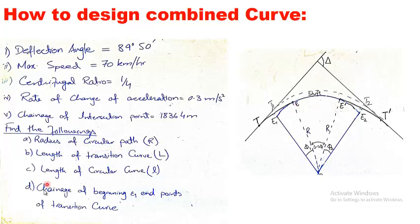The parameters we need to find from the given data are: the radius R of the circular path (from E to E'); the length of the transition curve (from E to T, and symmetrically from E' to T'); and the length of the circular curve (from E to E'). We also need to find the chainage of the beginning point T and end point T' of the transition curve.